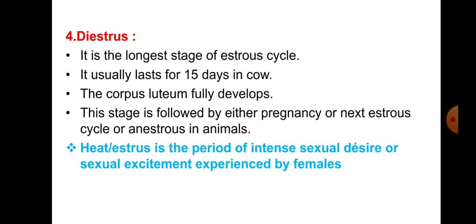Fourth is diestrus - it is the longest stage of the oestrus cycle, usually lasting 15 days in the cow. The corpus luteum is fully developed, and this stage is followed by either pregnancy or the next oestrus cycle. Heat, or oestrus, is the period of intense sexual desire or sexual excitement experienced by the female.